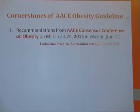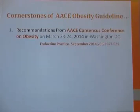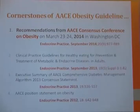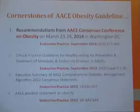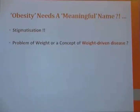All these pillars of the AAC obesity guideline recommendations stem from the consensus conference on obesity that occurred in March last year in Washington, and all these comprehensive guidelines were published in the last one or two years. The major change which has shifted from all previous guidelines is that they have questioned whether the term 'obesity' should be replaced with a more meaningful, scientifically updated name.